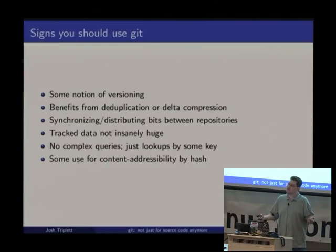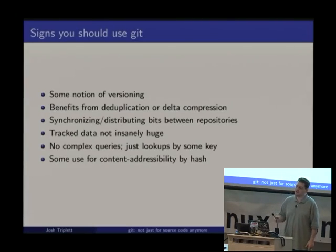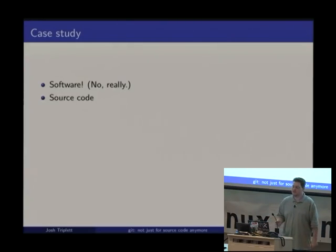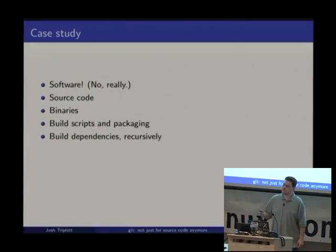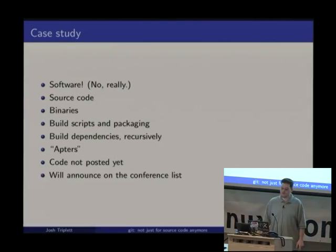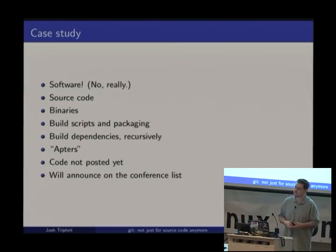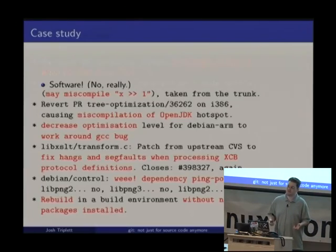With all those examples of using Git for something other than software, I'd like to present a case study of using Git for software — but not just source code. I want to use Git for all the binaries, all the build scripts and packaging, and all build dependencies recursively. This software is called Actors. The code isn't posted quite yet — I thought you might prefer to see slides at this conference — but I'll be announcing availability soon. The motivation was primarily getting sick of bugs with dependencies.